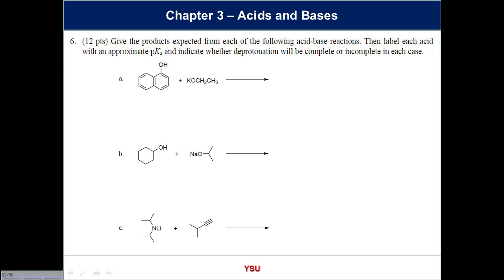The last thing I've got to say today is to think about actual problems from exams. On my first exam, there is always a page of this stuff — sometimes worth 16 points, sometimes 20. If you know it's going to be there, you should study this. So on this example, we've got three acid-base type problems. Your job is to give me the products, label each acid with an approximate pKa, and then tell me whether it is complete or incomplete — deciding when things will go all the way to the right or not.